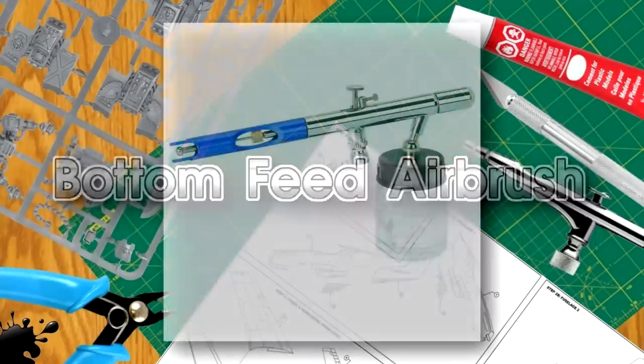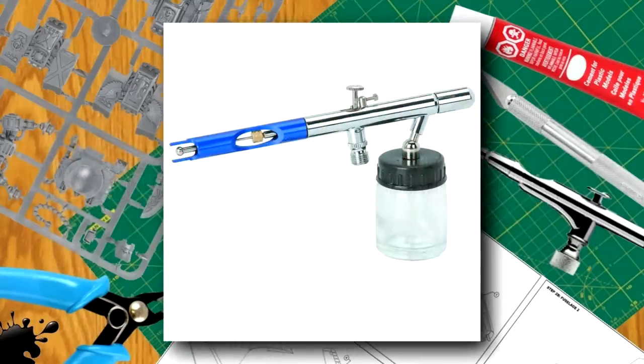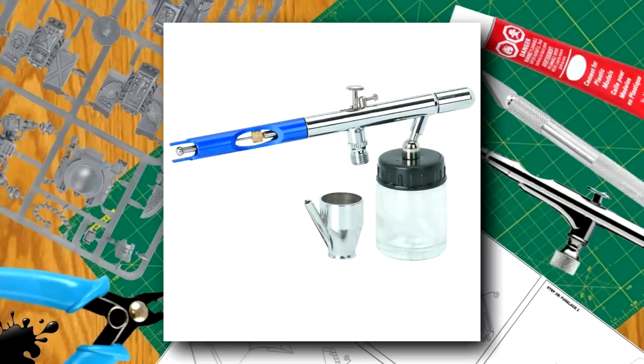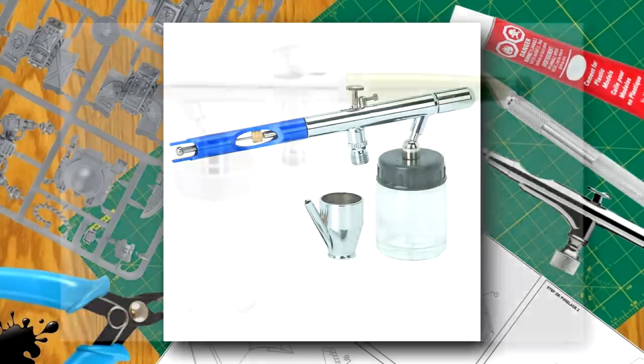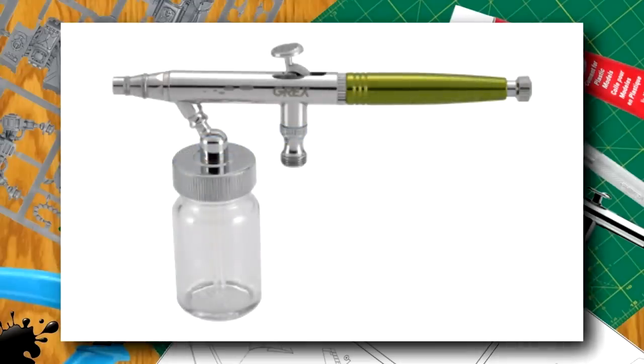Bottom feed refers to airbrushes where paint enters through a siphon tube or color cup attached to the bottom of the airbrush. This configuration is generally more versatile and enables the user to change colors quickly and use large amounts of paint without refilling.